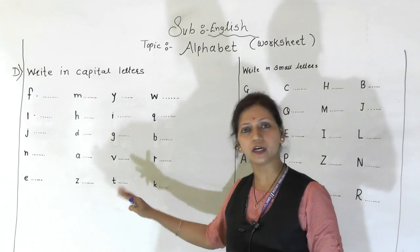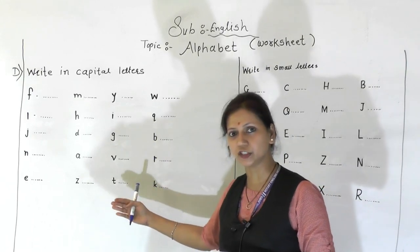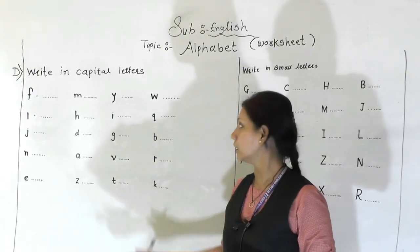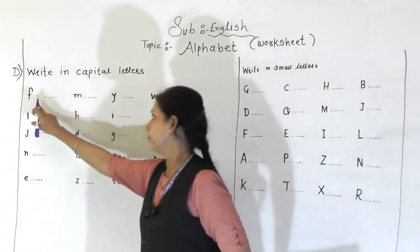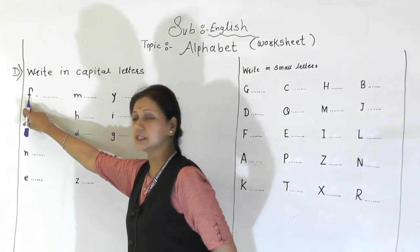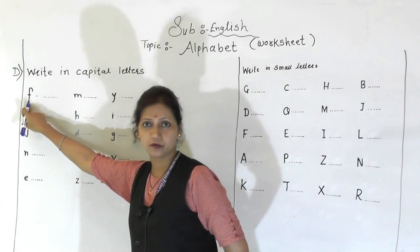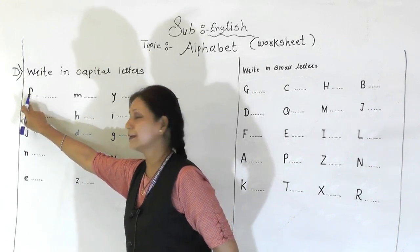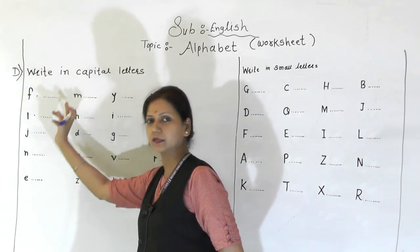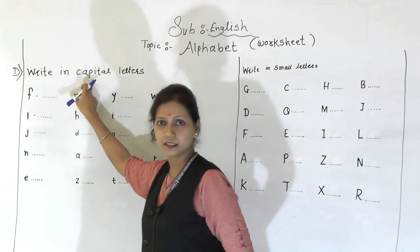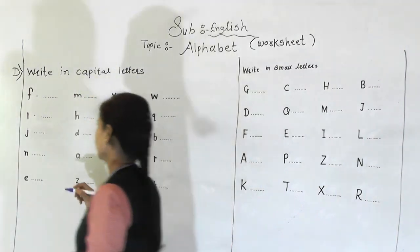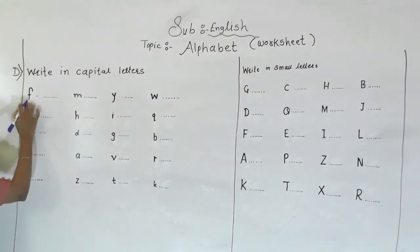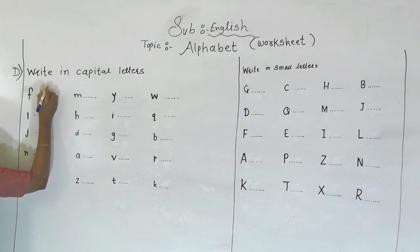Which is the first letter? F. What is this? F. So this F you have to convert into capital letters. So how to write capital letter F. F. Next is M. So how to write capital M. You have to join this line to this line.